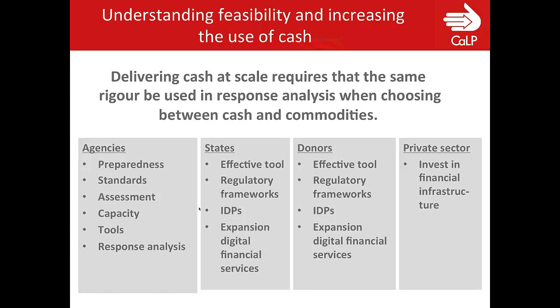The document is available online so I won't spend a lot of time explaining the content, and there's also a way for you to still provide feedback to it. The first core theme is around understanding feasibility and increasing the use of cash. This talks about the burden of proof and the right modality, and if we are to scale up cash, this needs to significantly change. I'll focus on the commitments that people have asked we include in the Agenda for Cash.